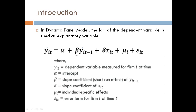In this equation, y_it is the dependent variable, alpha is the intercept, beta is the slope coefficient, lambda is also a slope coefficient of the independent variable, mu_i is the individual specific effect, and finally this is the error term.